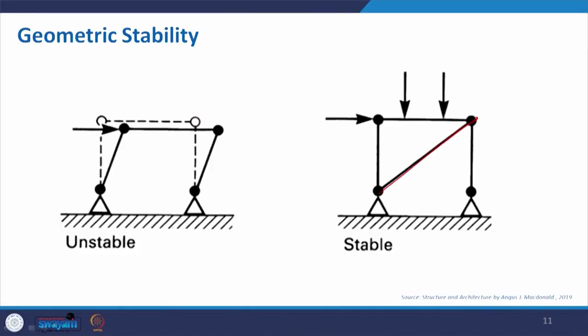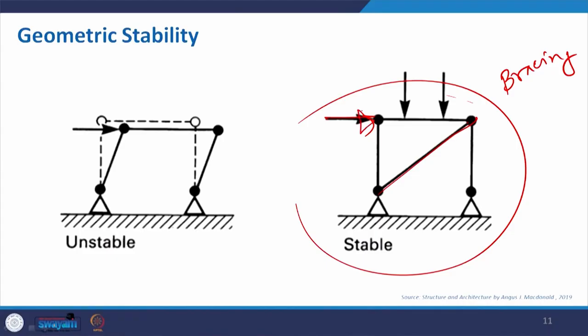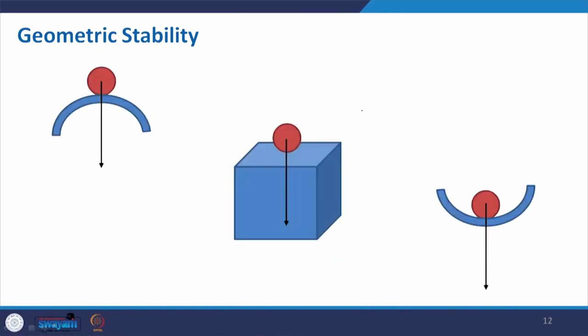Now, geometric stability depends on the overall arrangement and shape. If it is a single object placed normally it has no issue, but if you put it on a corner it becomes very unstable. The arrangement of structural components — whether a single mass or multiple connected elements — determines how stable the form is.